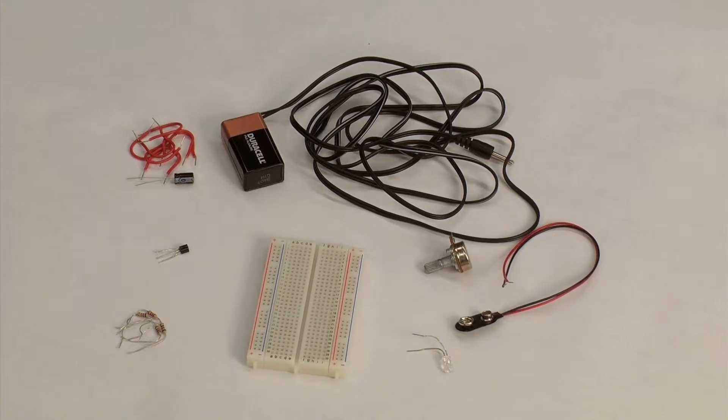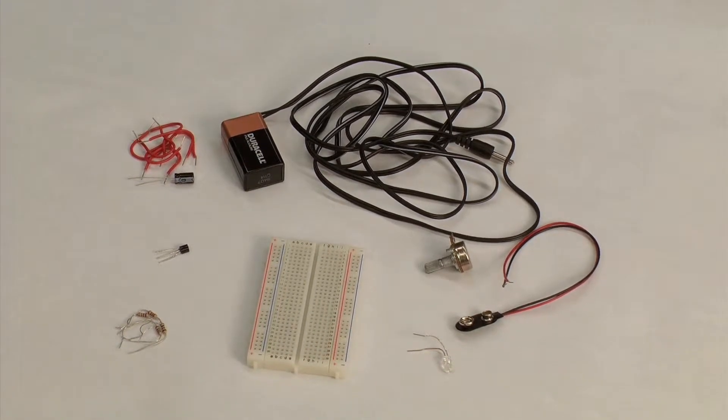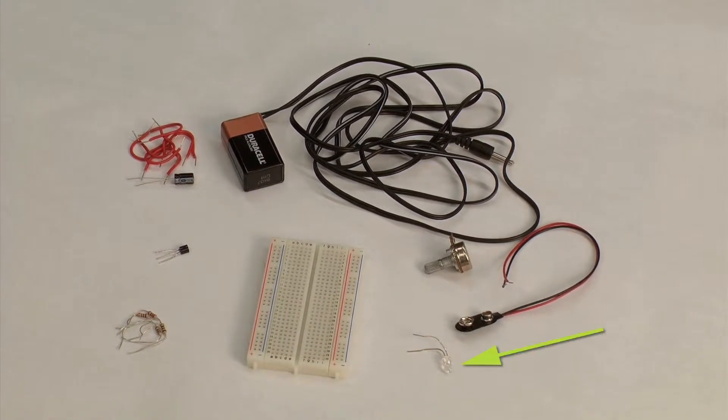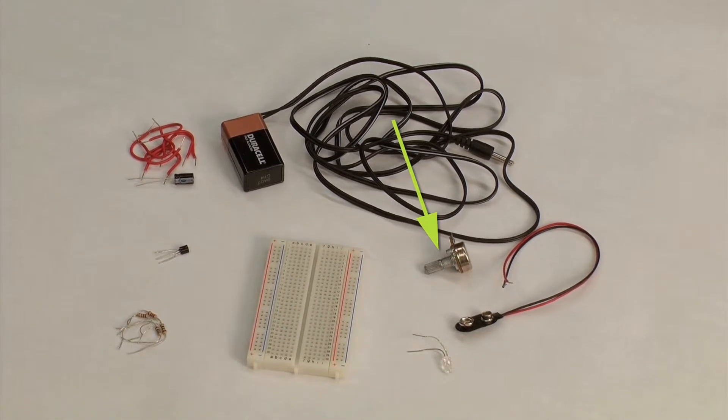While building our infrared music transmitters, we'll come across a few more new circuit components. These include an infrared LED, a transistor, and a potentiometer.